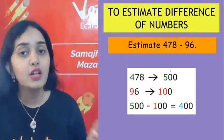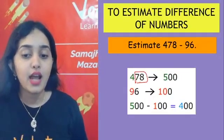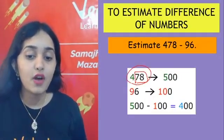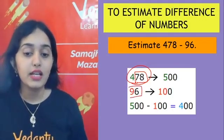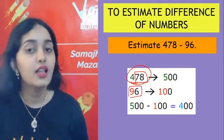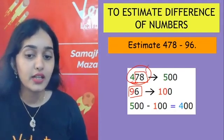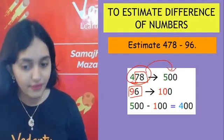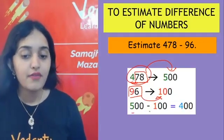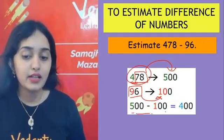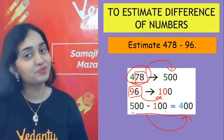Similarly, to estimate a difference, first round off both numbers. We are rounding to nearest 100 here because the numbers have two and three digits. 478 rounded off to nearest 100 becomes 500. 96 rounded off to nearest 100 becomes 100. So 500 − 100 = 400 is the estimated difference.